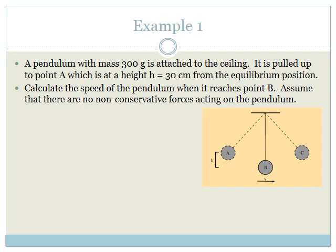Let's look at this example. We have a pendulum of mass 300 grams attached to a ceiling. It is pulled up to point A, which is at a height of 30 centimeters from the equilibrium position. Calculate the speed of the pendulum when it reaches point B. Here it is connected to the ceiling — point A is at a height of 30 centimeters above the rest point, and it then swings down to point B.